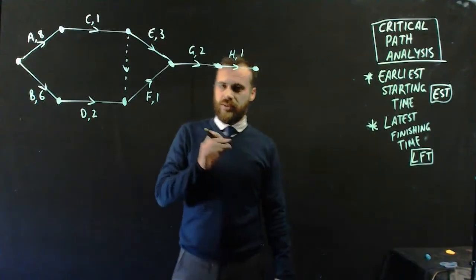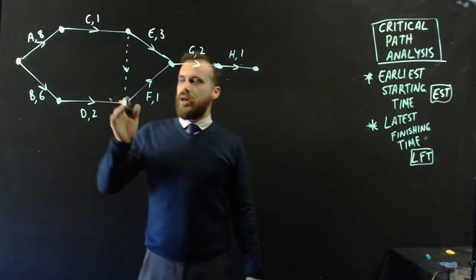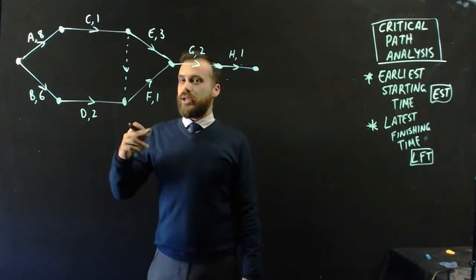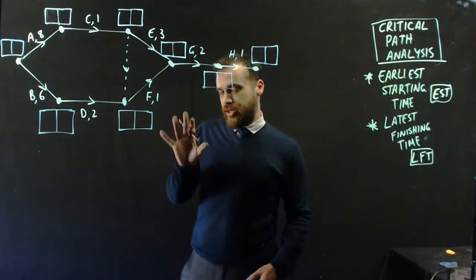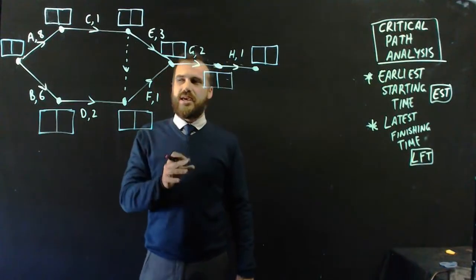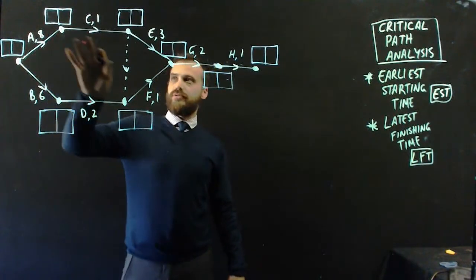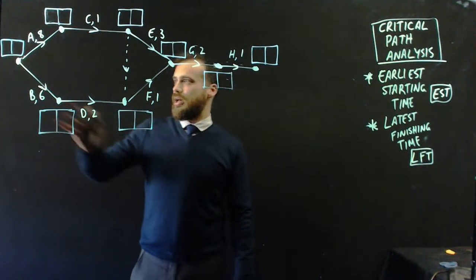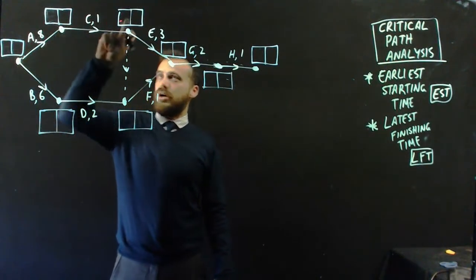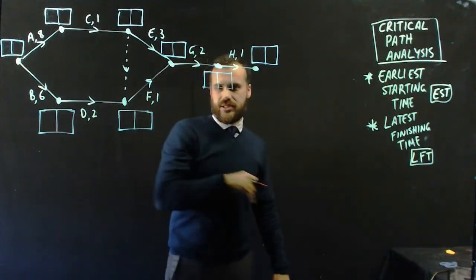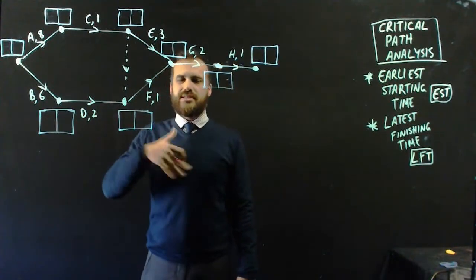Earliest starting time. And the question you have to ask yourself is, what is the earliest that I can start each of these activities? Now the best way to figure this out is through a process called forward scanning. You can see I've drawn in all of these little double boxes here at each of the vertices. On the left hand box, I'm going to put the earliest starting time, the earliest that the next activity can start.